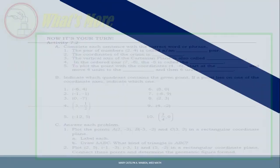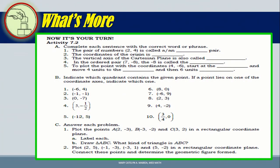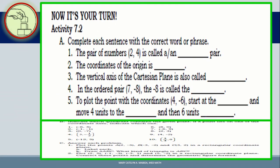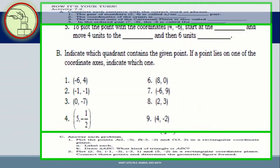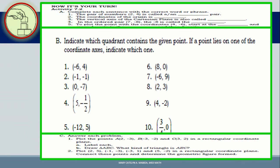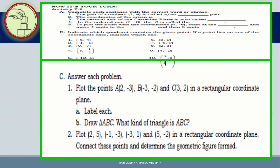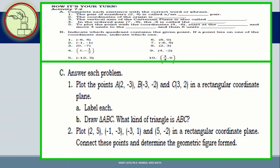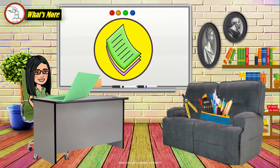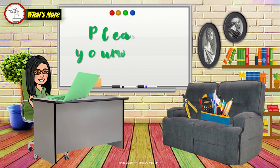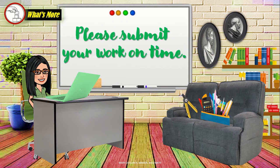Very good, now it's your turn. Activity 7.2 has 3 parts. Part A: complete each sentence with the correct word or phrase — there are 5 numbers to work on. Part B: indicate which quadrant contains the given point; if a point lies on one of the coordinate axes, indicate which one. Part C: answer the problem — you have 2 problems to work on. Answer on a separate sheet of paper and please submit your work on time.